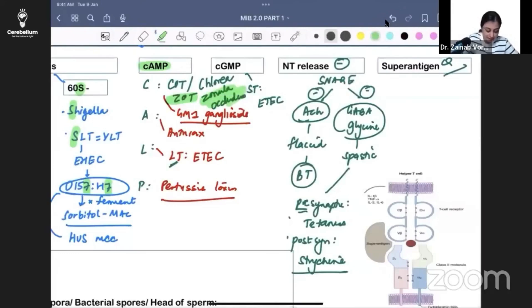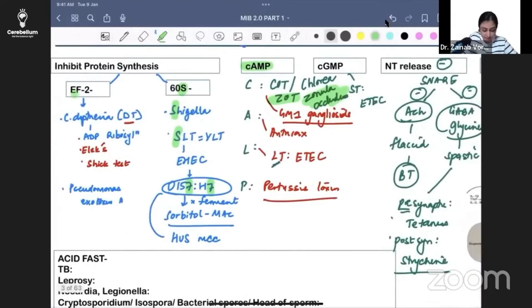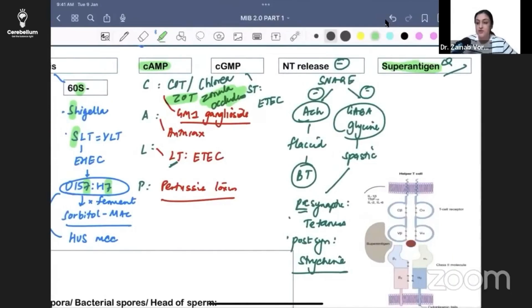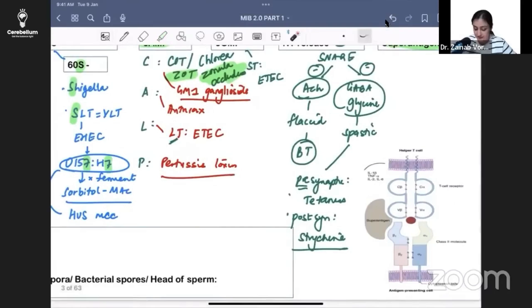How does superantigen bind? It binds to the side. Normally, antigen-antibody needs this specific site. Here, this site is not needed, specificity is not needed. It's going to bind to the side and create a cytokine storm.